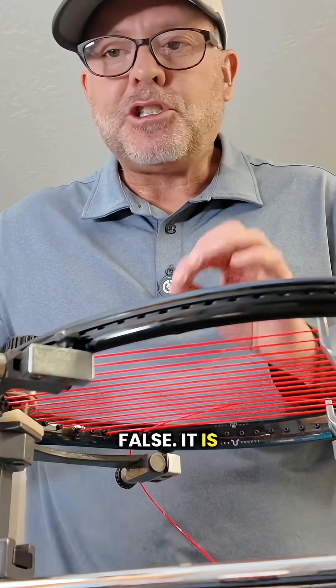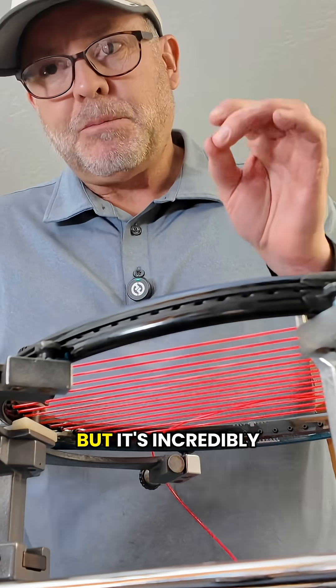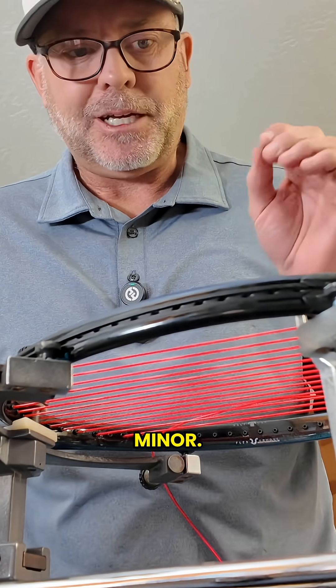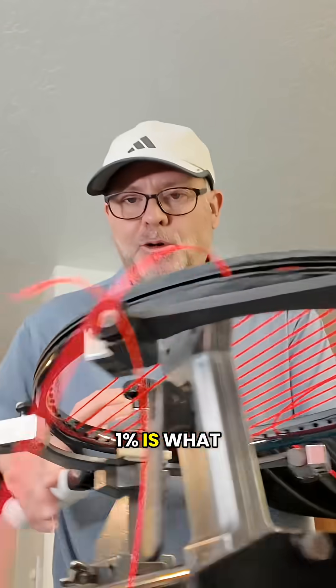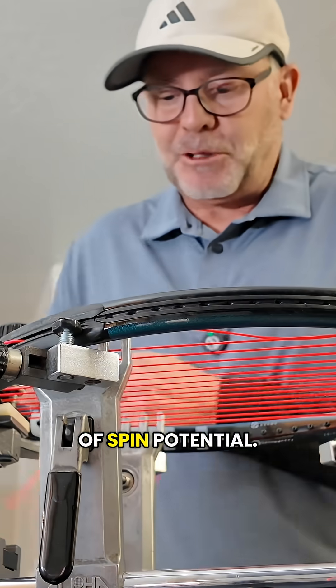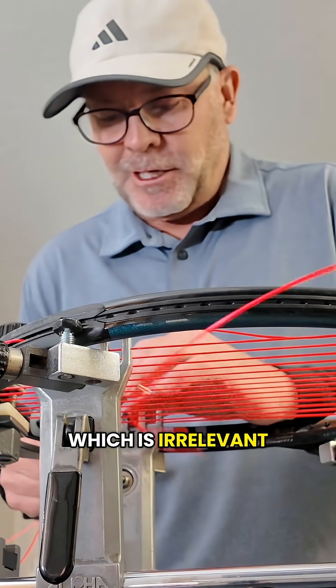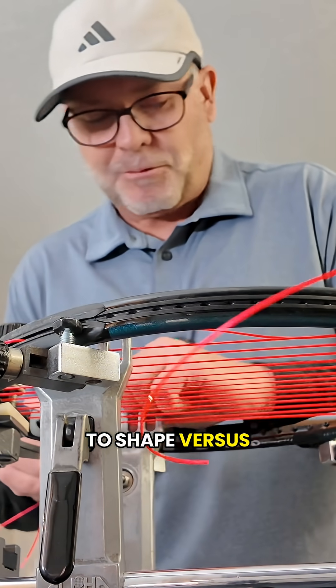That is generally false. It is so minor. It's actually true, but it's incredibly minor. Like less than 1% is what you're going to see difference in terms of spin potential, which is irrelevant when it comes to shape versus round strings.